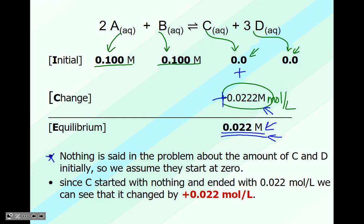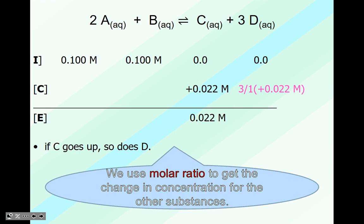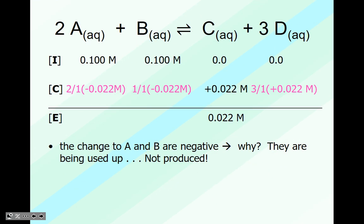Nothing is said in the problem about the amount of C and D initially, so we assume they start at zero. Since C started with nothing and ended with 0.022 moles per liter, it changed by a positive 0.022. Now that we have that information, we use our molar ratios to get the other data. The change to A and B are negative — they are being used up, not produced. We include that negative sign because those entities are reducing as they turn into products.